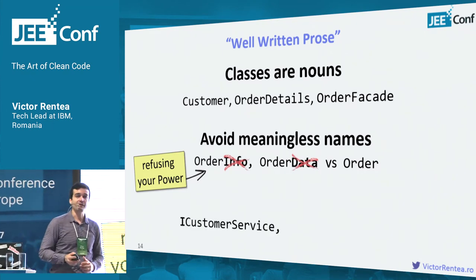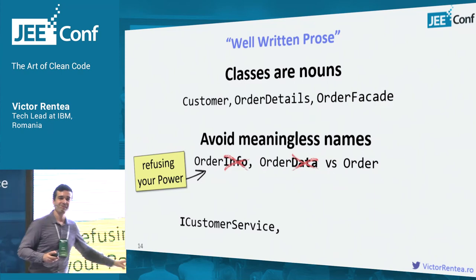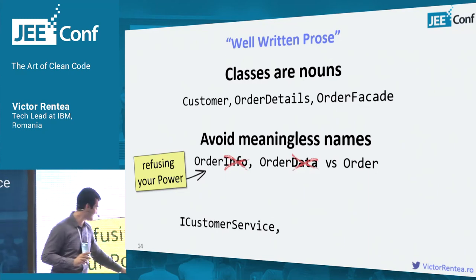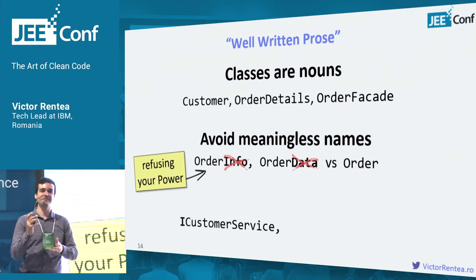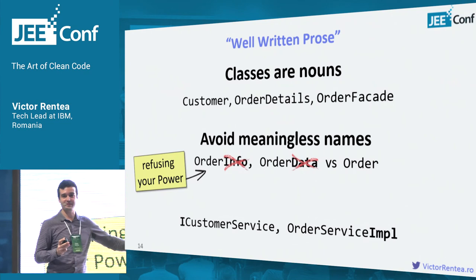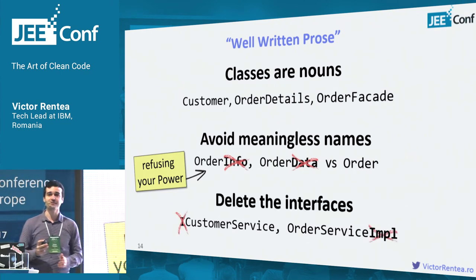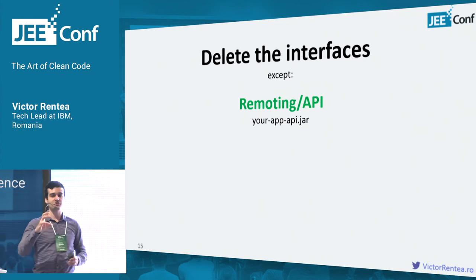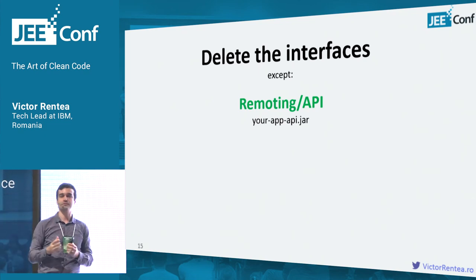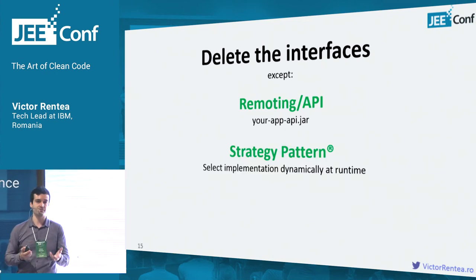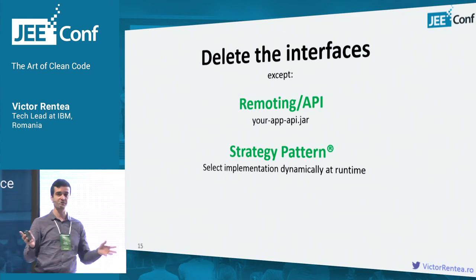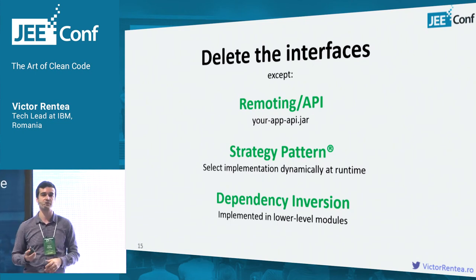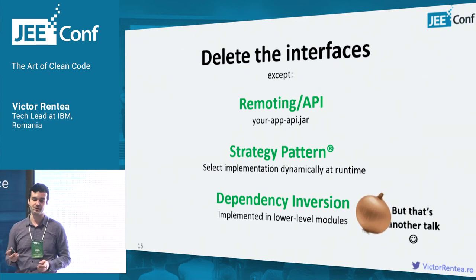Whenever you encounter something called 'iCustomerService,' it's an interface — and I'll guess its implementing class is named 'CustomerService.' It's just useless — this is misunderstood polymorphism. My point: delete your interfaces. There are only three excuses to use interfaces: when you package them in jars for clients to do remote invocations, when you want a strategy pattern with multiple implementations at runtime, or when implementing the dependency inversion principle in a lower-level module.